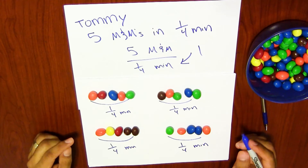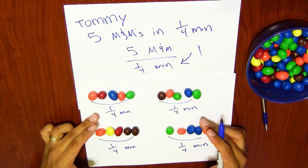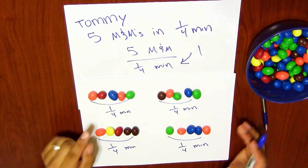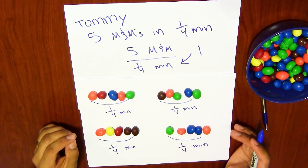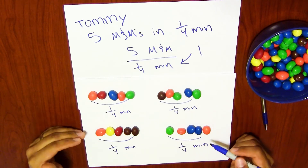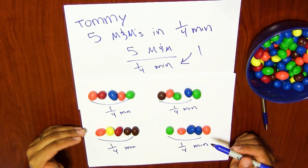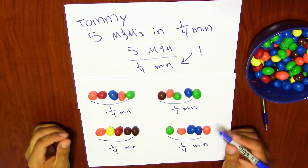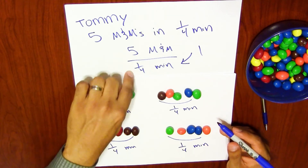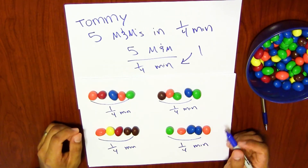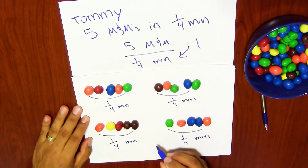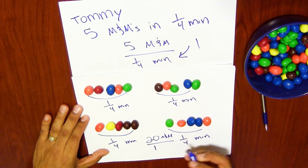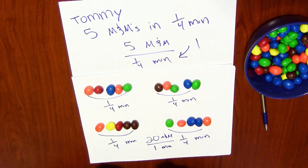So let's see. I know that a fourth plus a fourth plus a fourth plus a fourth — all of that gives me one minute. We have four equal parts, and now I have a total of 20 M&Ms. This lets me know that though his rate is 5 M&Ms per fourth of a minute, his unit rate, where the denominator is equal to one, could be written as 20 M&Ms for one minute — so, 20 M&Ms per minute.